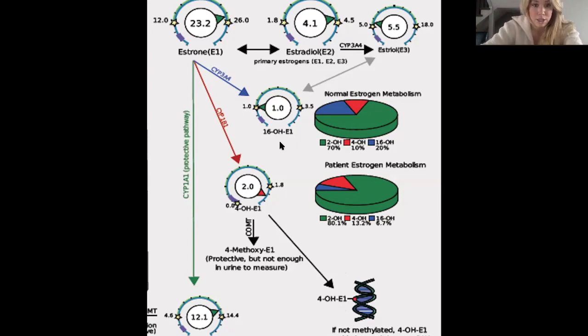16-OH, on the other hand here, this can go into estriol, E3, and become excreted. If that happens, that's all great. But if it doesn't happen, this is where you can see things like heavy periods, breast tenderness, clotting, and increased cancer proliferation if you have it, which is not something that you necessarily want. No one wants proliferation to be occurring if they have an estrogen-dependent cancer. So this is something that you really need to pay attention to.